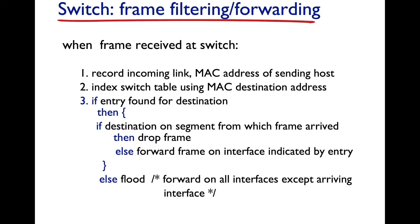When we last left off, we talked about selective forwarding, which is what switches perform in getting a frame from one incoming link to some appropriate learned link. If you find an entry for a destination MAC address, you forward it out the link associated with that entry in the forwarding table. If there's no destination entry, you flood. Otherwise you drop the frame — you never forward along the link from which it originated.